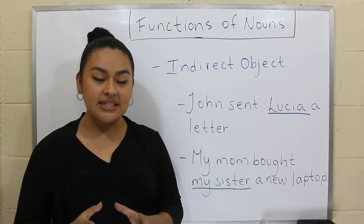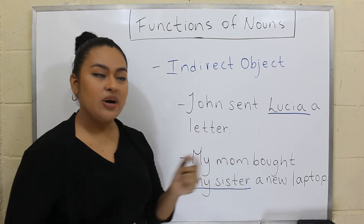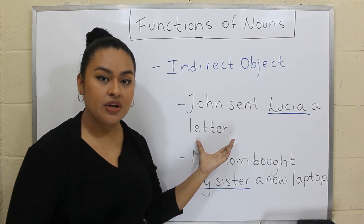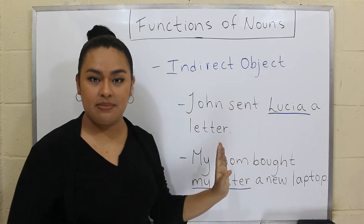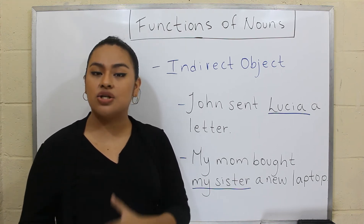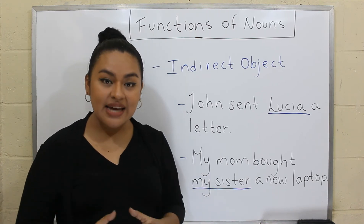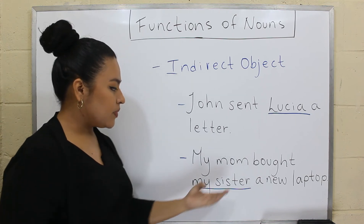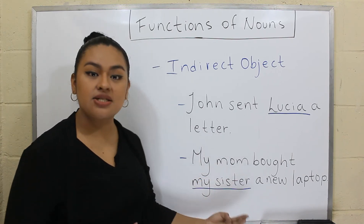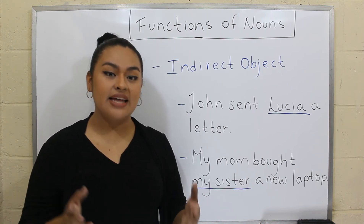With this type of object, we should consider two different aspects to identify the indirect object. The first one: the indirect object always goes between the main verb and the direct object. In this case, we have the main verb send and the direct object letter. So if you notice, Lucia is between them — and that's the first key. The second key is that if we ask the question to what, for what, to whom, or for whom after the direct object, we get an indirect object. For example, my mom bought a new laptop for whom? For my sister. So my sister is the indirect object. And that's the second key we can use to identify the indirect object.